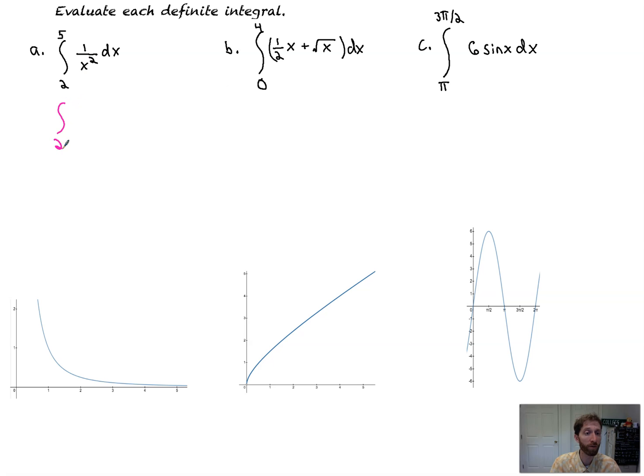This right here is equal to the integral from 2 to 5 of x to the negative two dx. The antiderivative of this is x to the negative one all over negative one, and that's evaluated. Some people do a straight line, some people do brackets from 2 to 5.